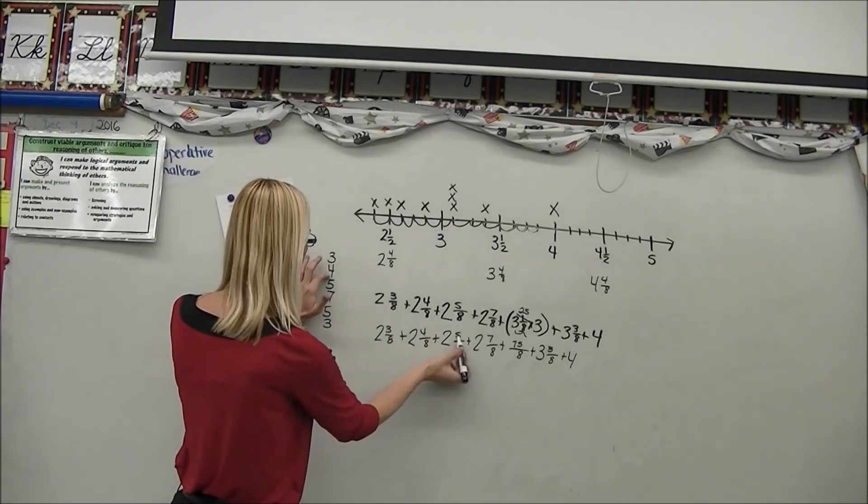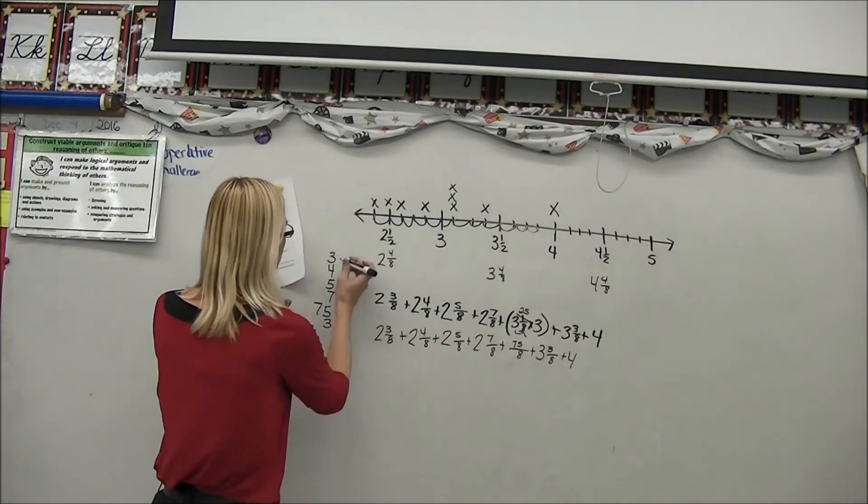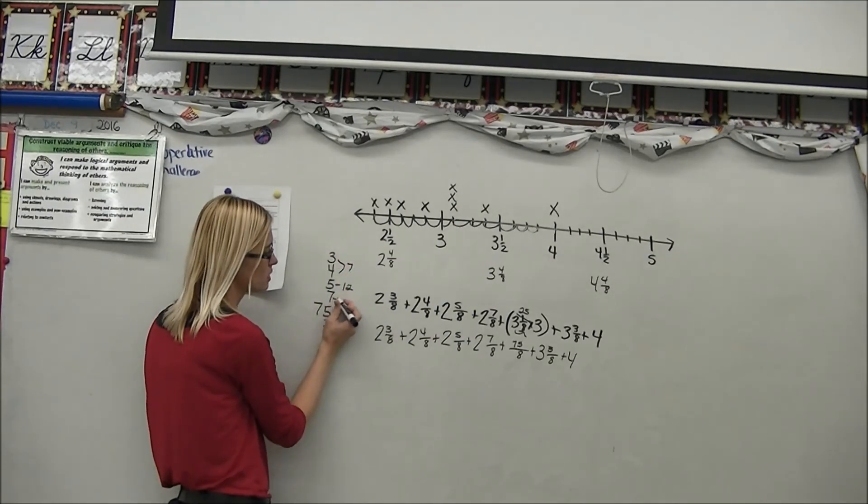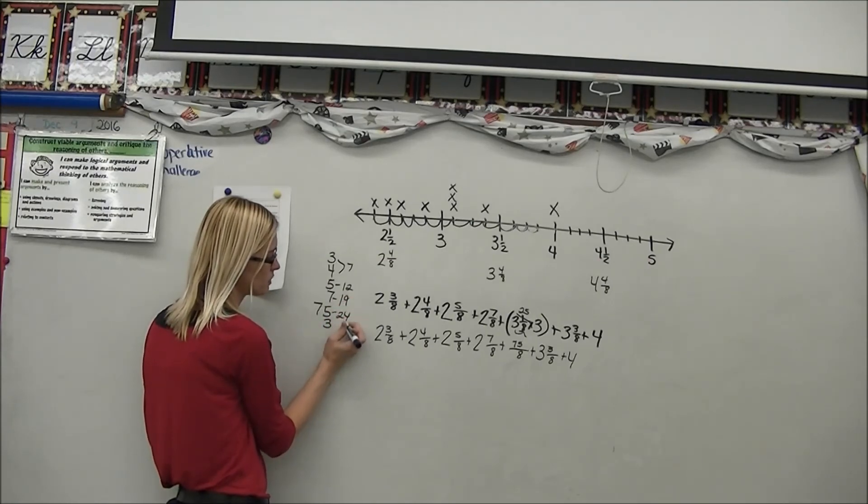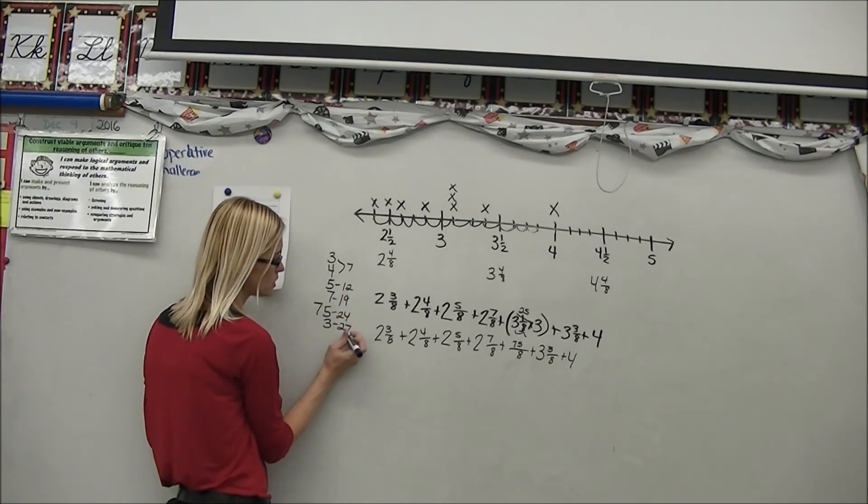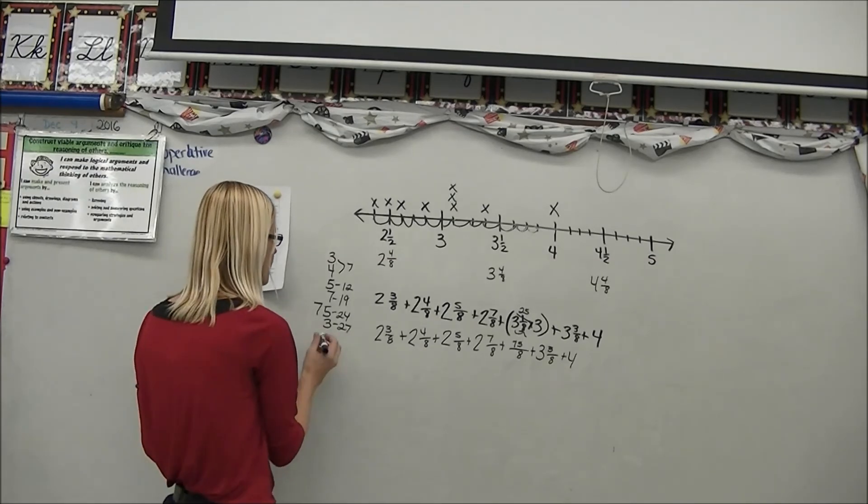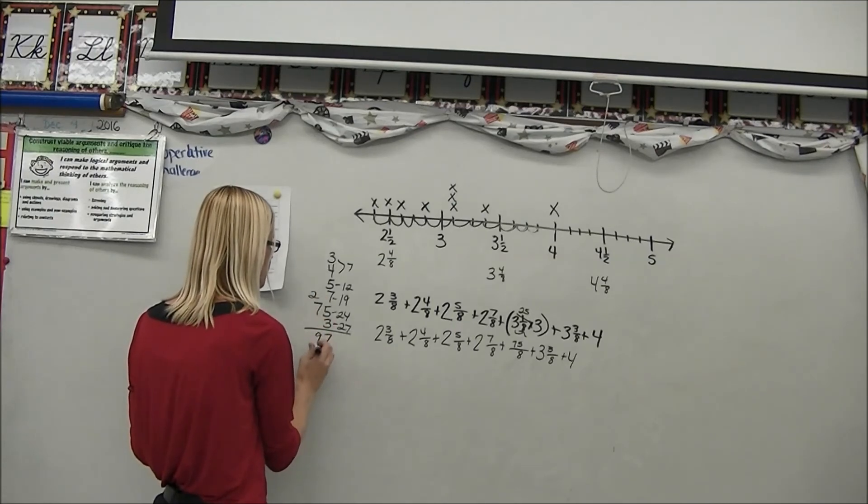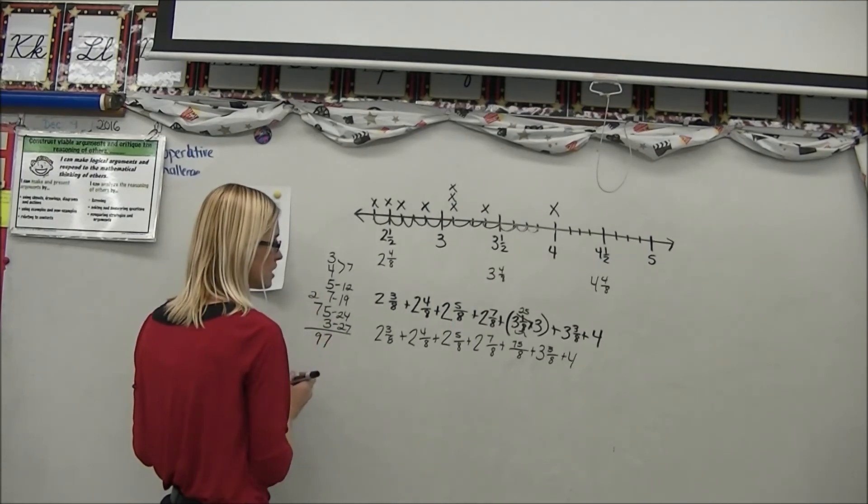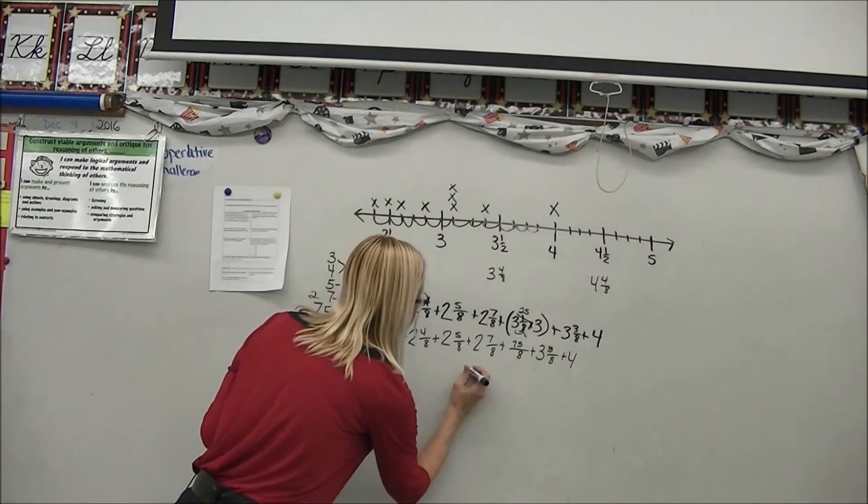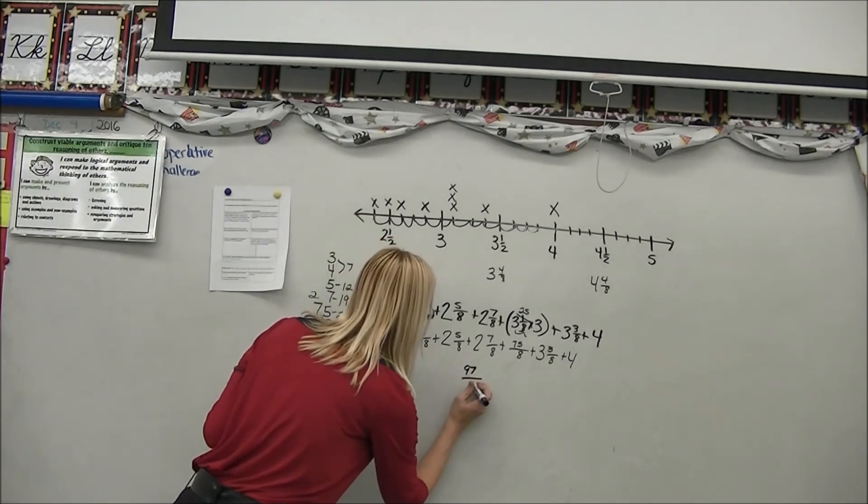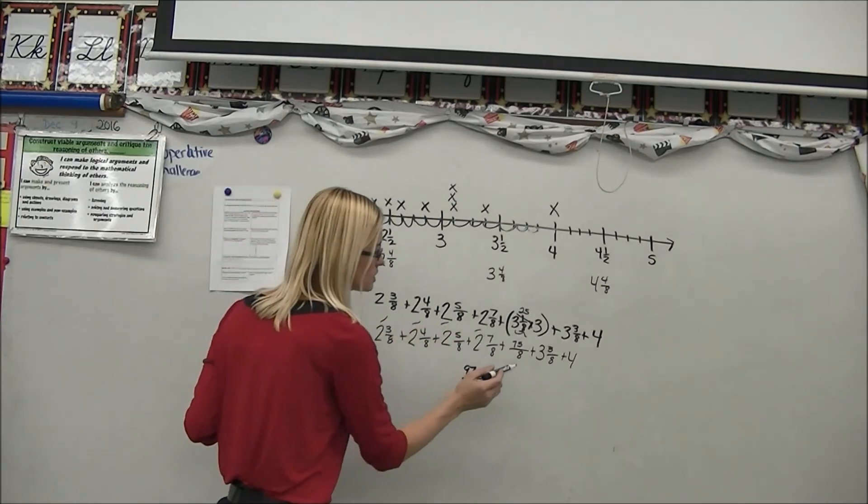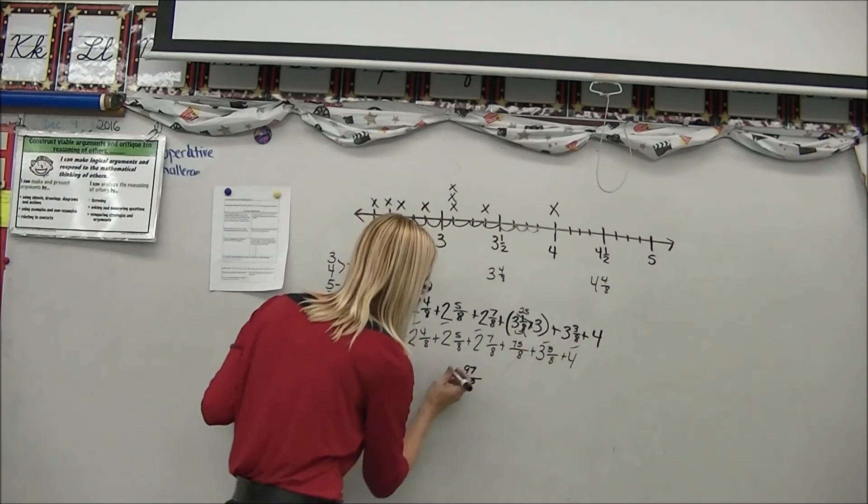3 plus 4 plus 5 plus 7 plus 75 plus 3. Okay, so 3 plus 4 is 7 plus 5 is 12 plus 7 is 19 plus 5 is 24 plus 3 is 27. So now I have to drop down to 7. I'm going to carry my 2 and now I have 97 eighths. So 97 eighths and now I'm going to count 2, 4, 6, 8. 8 plus 3 is 11 plus 4 is 15.